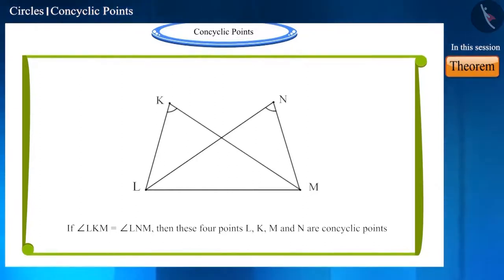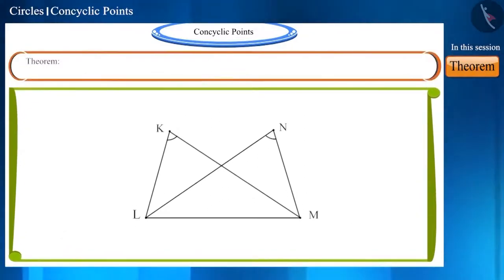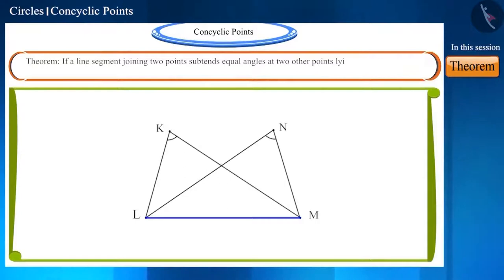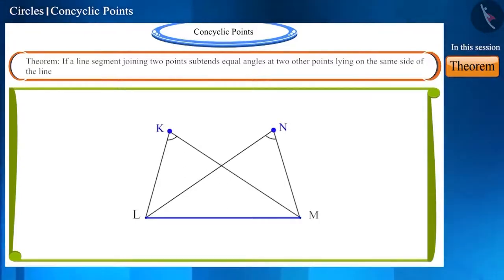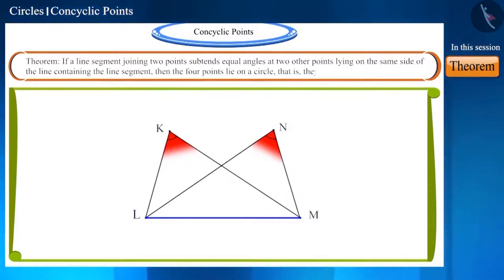This is according to a theorem whose statement is: if a line segment joining two points subtends equal angles at two other points lying on the same side of the line containing the line segment, then the four points lie on a circle — that is, they are concyclic.